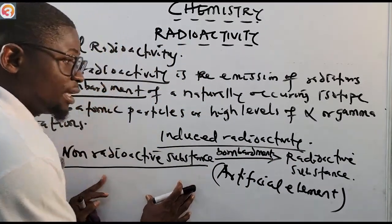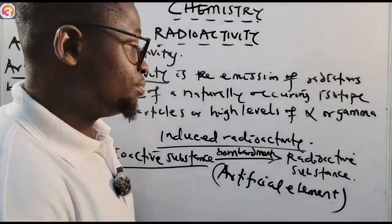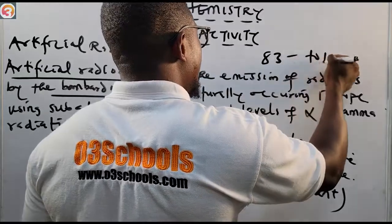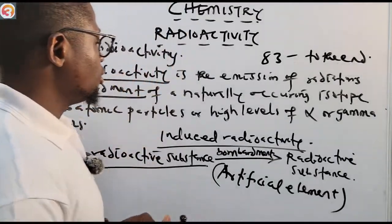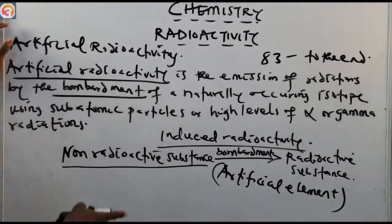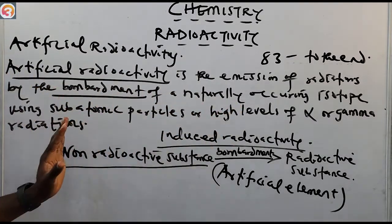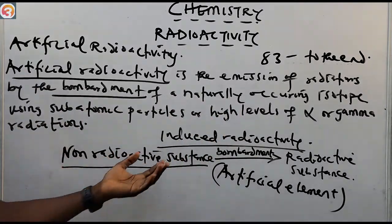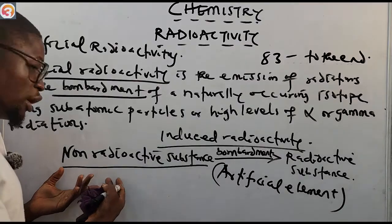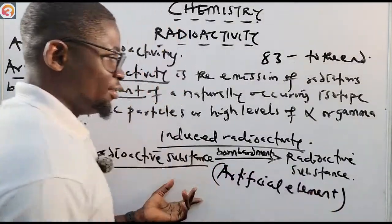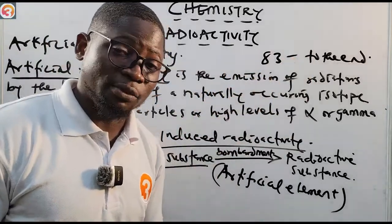The radioactive element formed after the bombardment of a non-radioactive substance is called an artificial element. These elements are found in the periodic table from element number 83 to the end — especially the lanthanide and actinide series. If you followed the class on the periodic table, that should be easy. So artificial radioactivity is the emission of radiation by the bombardment of a naturally occurring isotope using subatomic particles or high levels of alpha or gamma radiation. When a naturally occurring non-radioactive substance is bombarded, we get a radioactive substance, and the element so formed is an artificial element found from element 83 to the end in the periodic table.